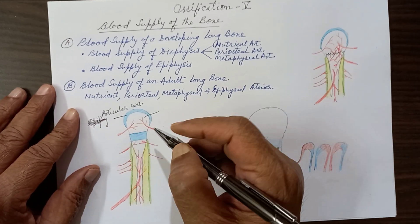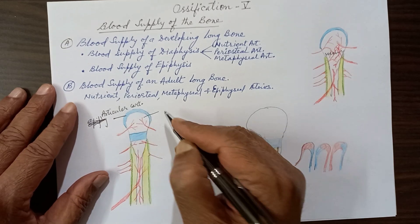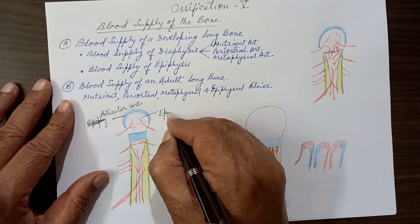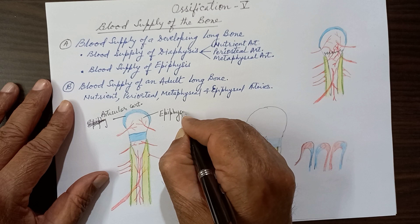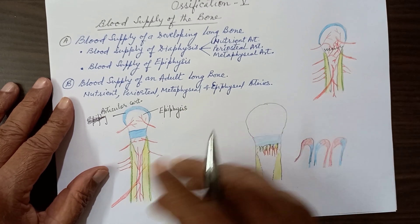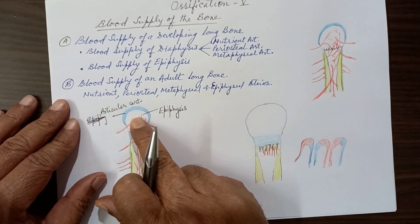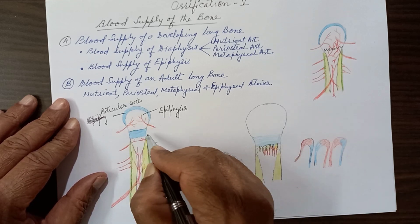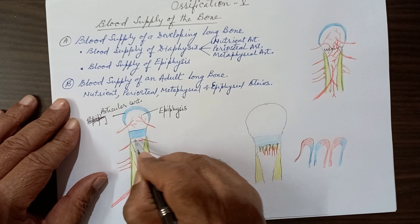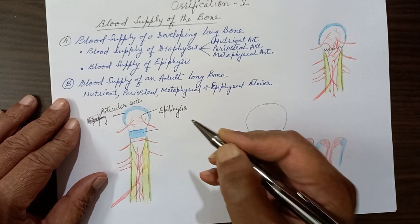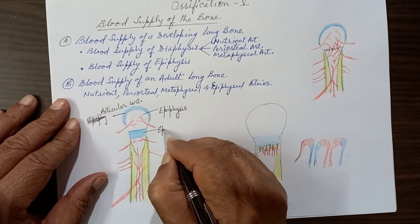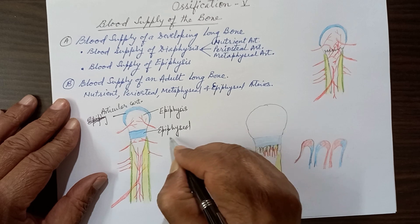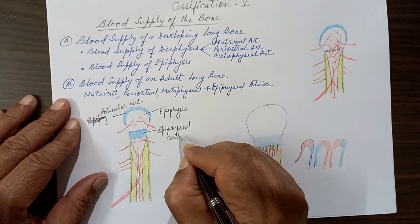Just deep to the articular cartilage you will see a spongy bone. This is the epiphysis, which we have already learned in the last two videos. It develops from the secondary center and is spongy. After that, there is a plate of cartilage which is again hyaline — this is the epiphyseal cartilage.